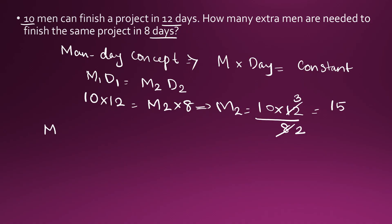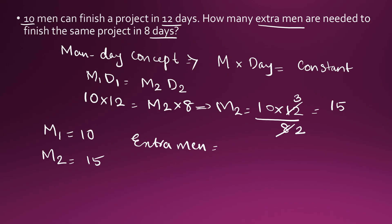Previously the number of men was 10, now it is 15. So the extra men needed is 15 minus 10, that is 5 men.